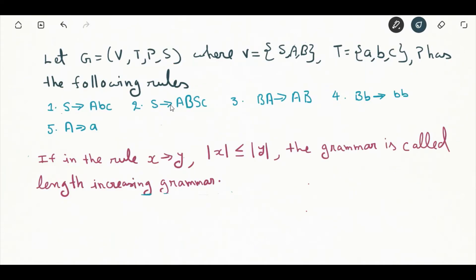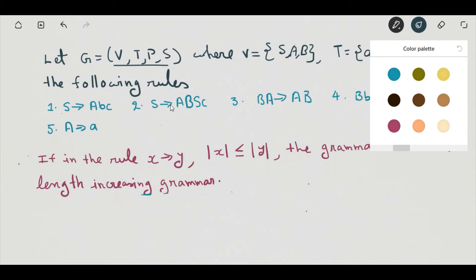Consider this grammar G equals VTPS where V consists of S, A, B, that is non-terminal alphabet. Terminal alphabet consists of a, b, c, and P has the production rules that is denoted by 1 to 5.